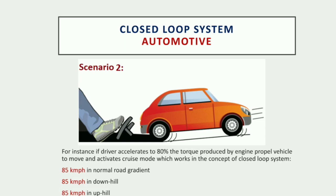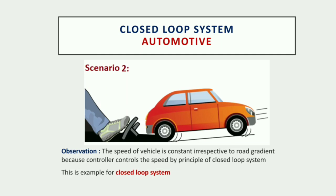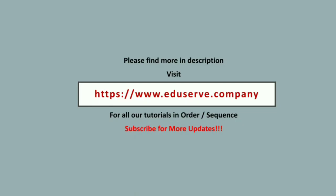The observation for the closed loop system is: the speed of the vehicle is constant irrespective of the road gradient, because the controller manages speed using the principle of closed loop. This same concept applies to other automotive systems such as ABS, ESP, and AC — all of which work under closed loop principles where the controller always gets the input and output, uses feedback, and produces an accurate result.